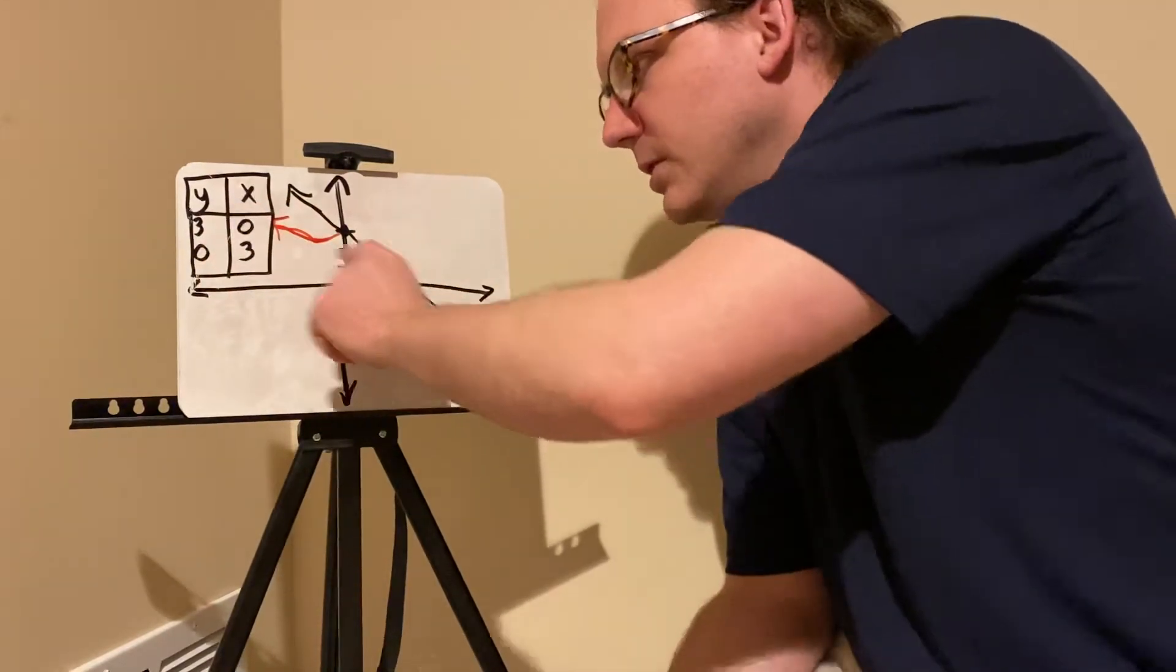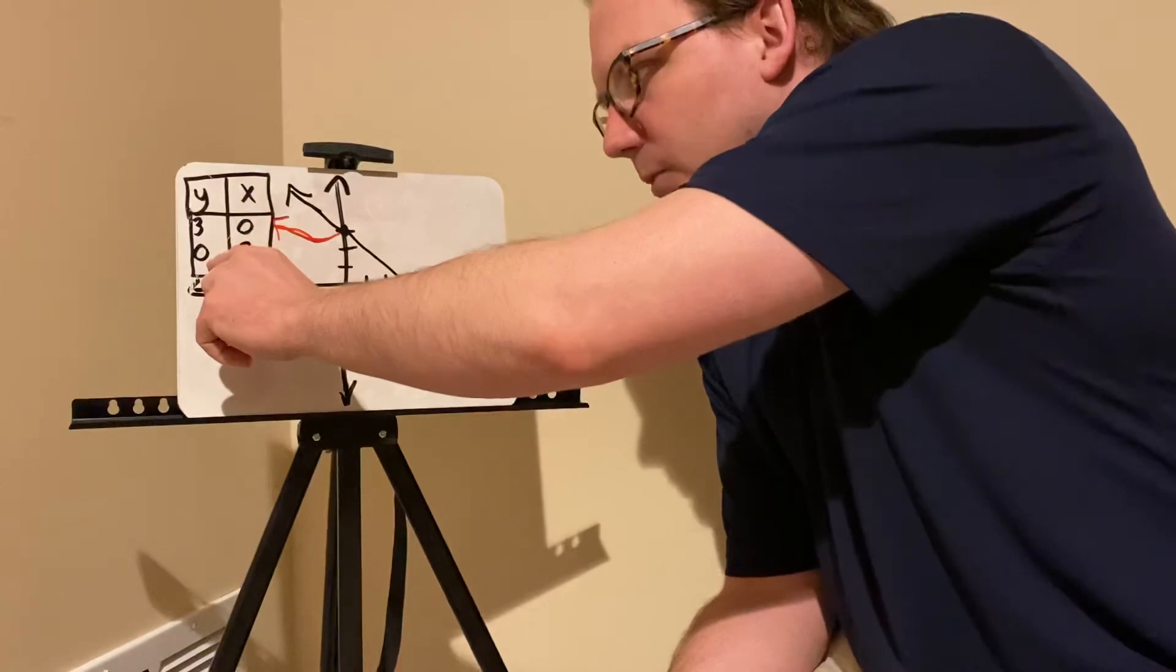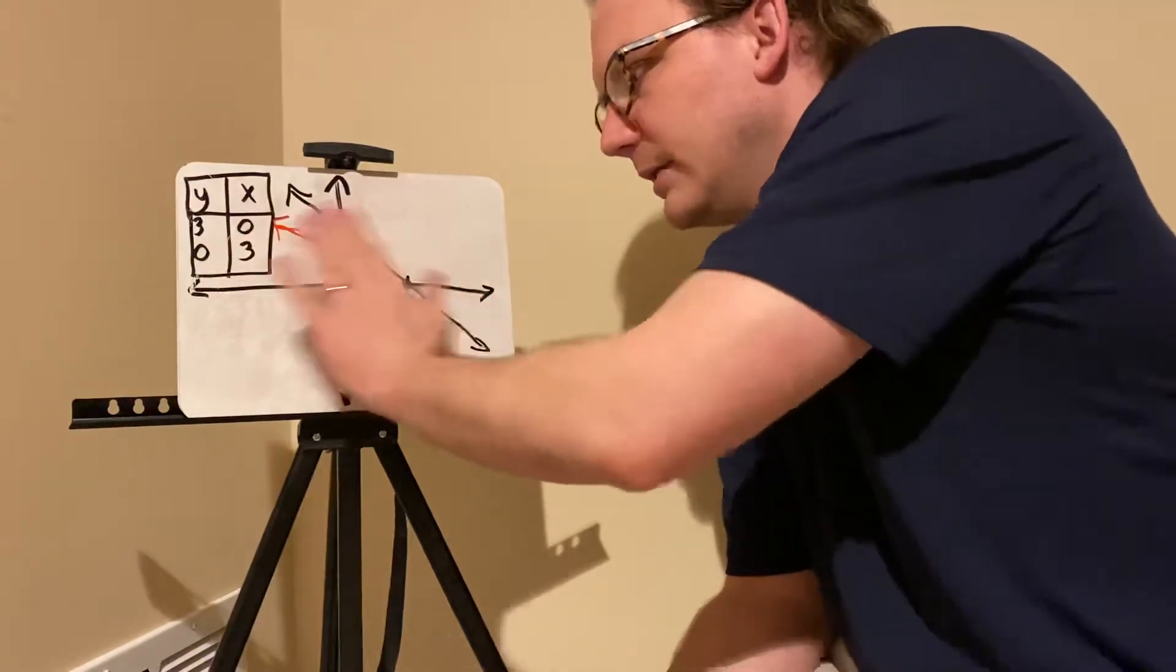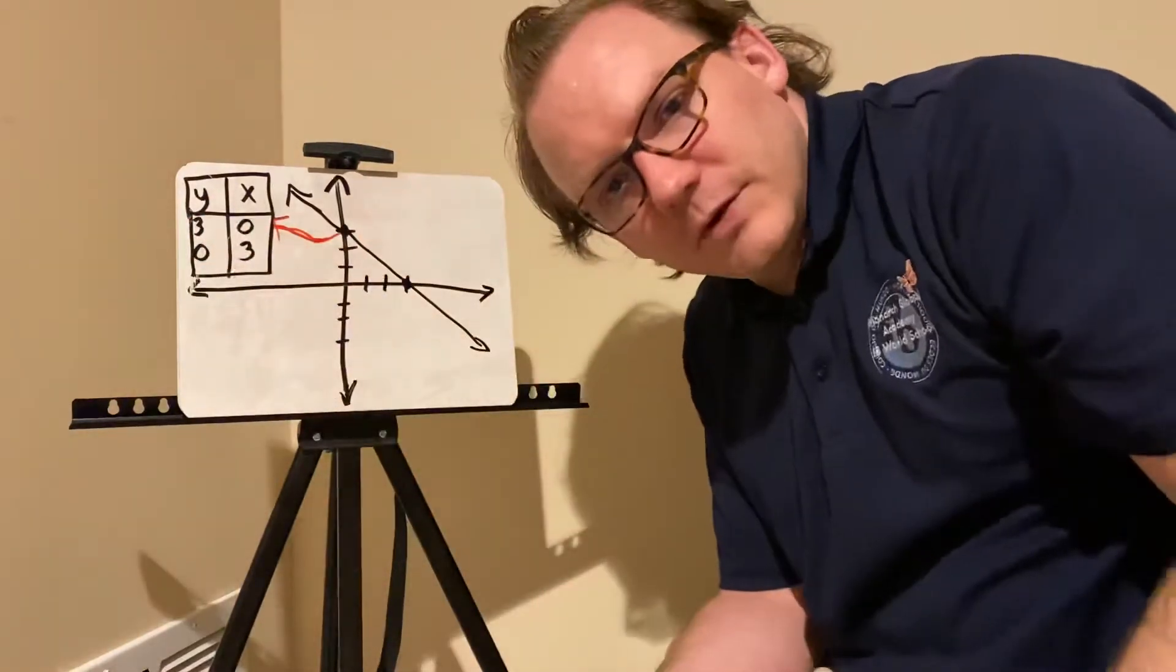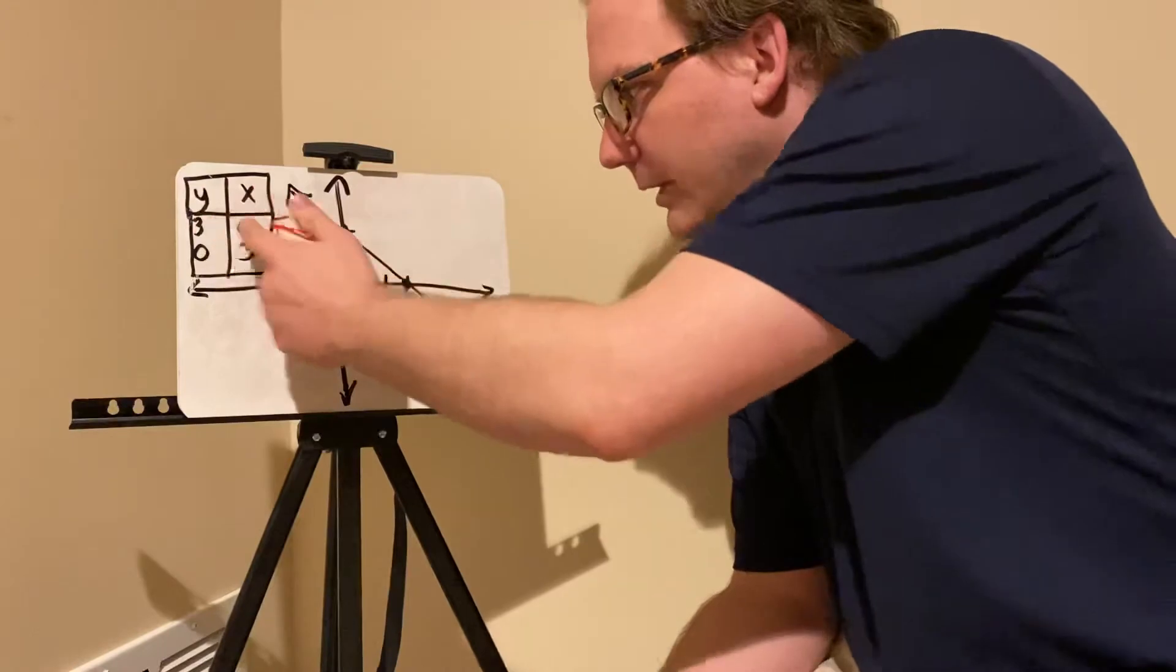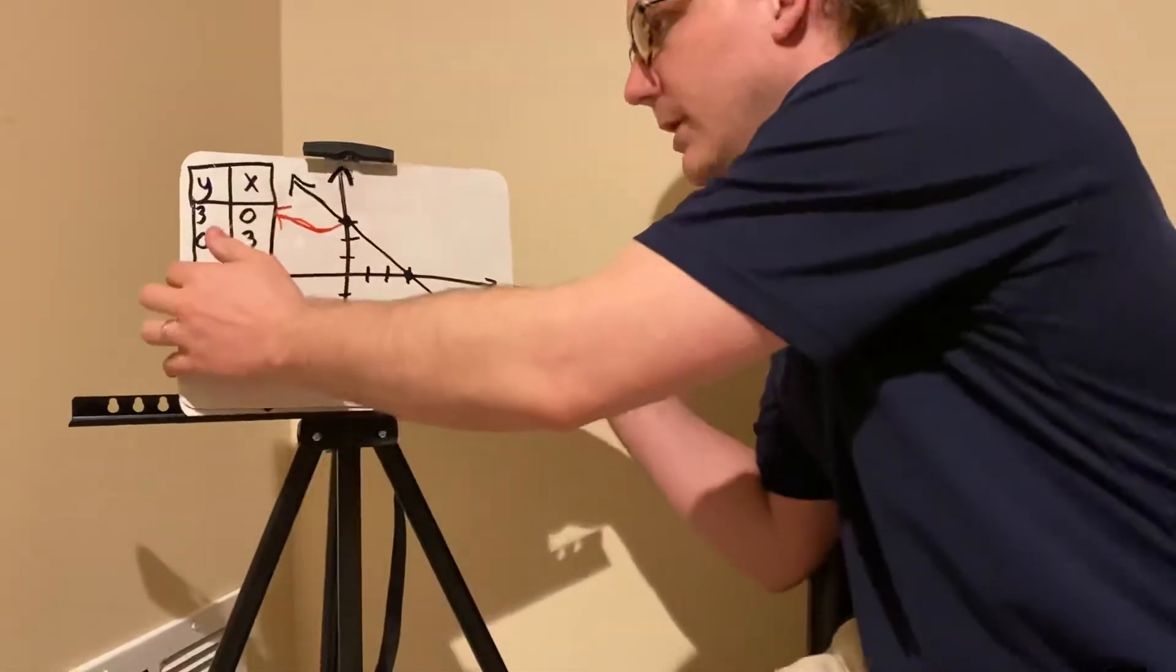Don't get confused with the x-intercept, which is when y is equal to 0. That's not the right one. So this is intentionally a little confusing, just to make sure you know it's when x is 0, that's your y-intercept, when it crosses the y-axis.